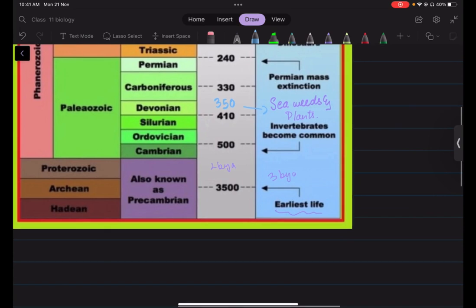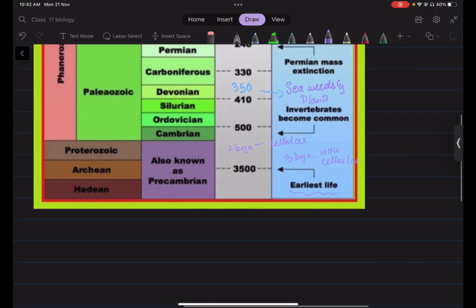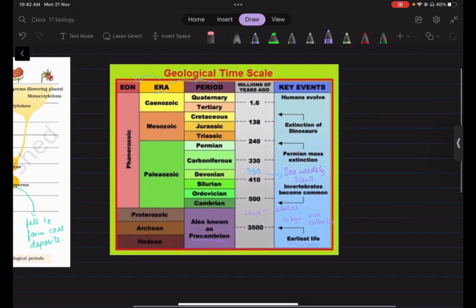So you can see here the earliest life, the non-cellular form was found 3 billion years ago and then 2 billion years ago we finally have our cellular form of life. So the most primitive form of life was basically found in the pre-Cambrian period.